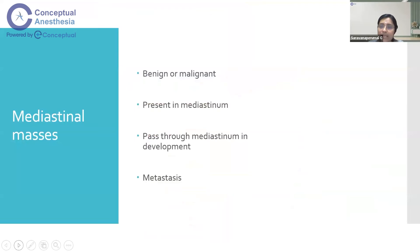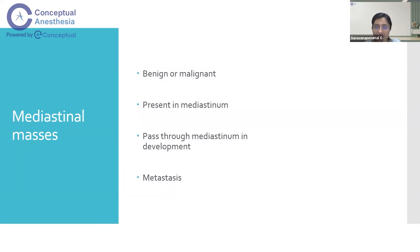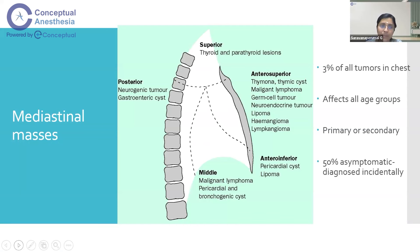Mediastinal masses can be benign or malignant. They can arise from structures already present in the mediastinum, from structures that pass through it during development, or from metastasis from infradiaphragmatic organs such as the pancreas or intestinal organs. They can also metastasize from thoracic areas such as lung or lymphoma. Mediastinal masses constitute about 3% of all masses from the thoracic inlet and affect all age groups. They can be primary or secondary. Secondary masses can come from infradiaphragmatic organs or from a seminoma — in which case a male patient's scrotum should also be examined.